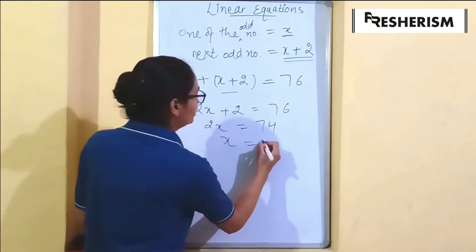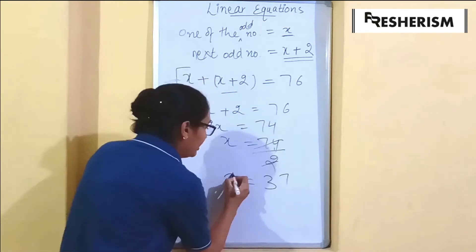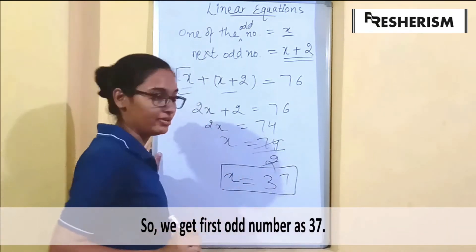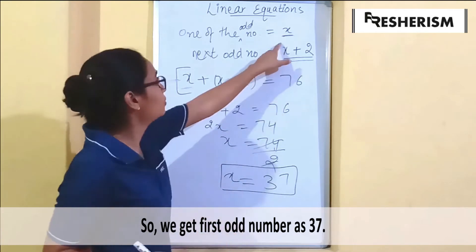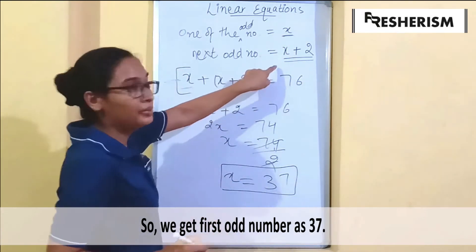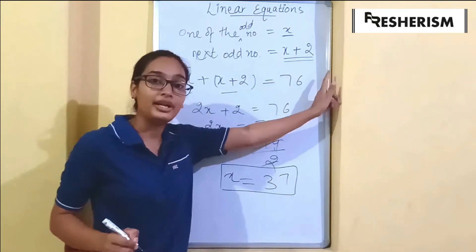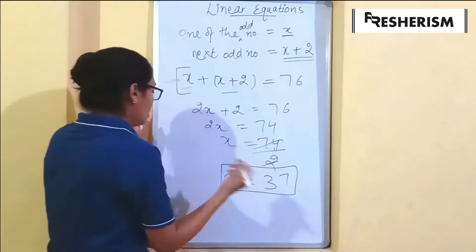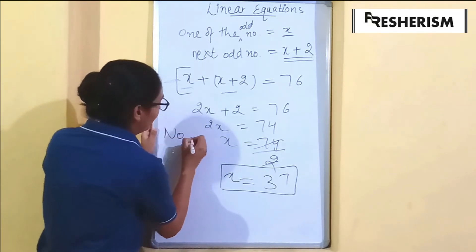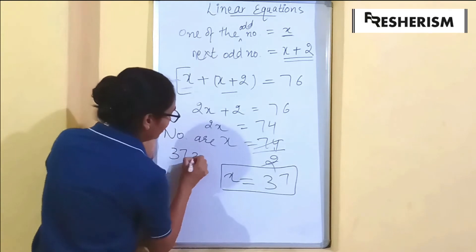Now 2x equals 74, so x equals 74 divided by 2, which gives x equals 37. Our first odd number is 37. The next odd number will be 37 plus 2, that is 39.